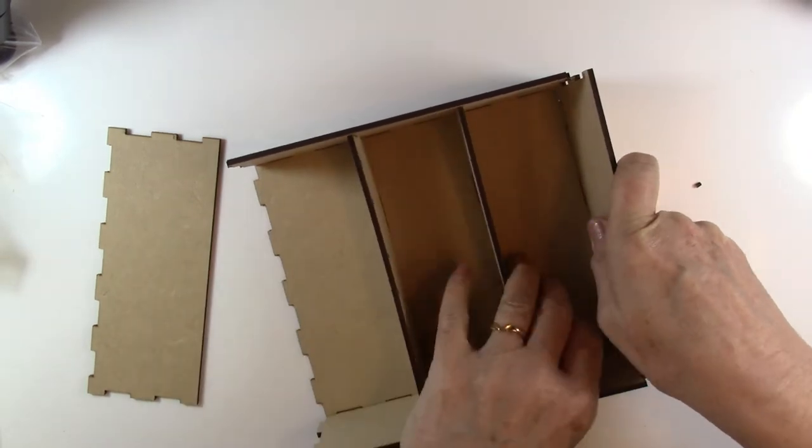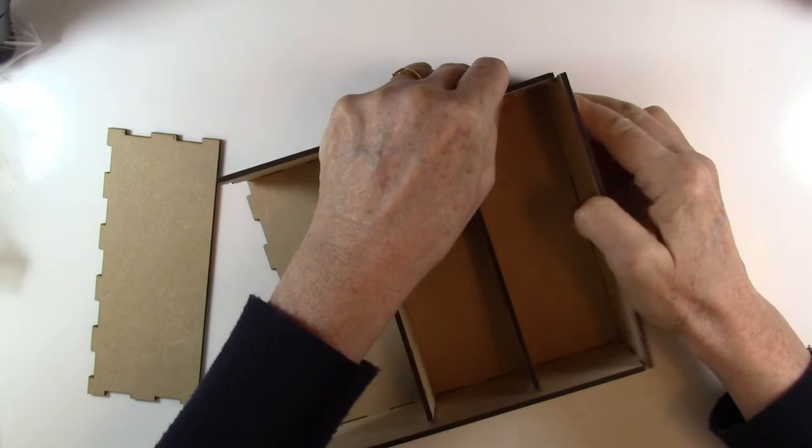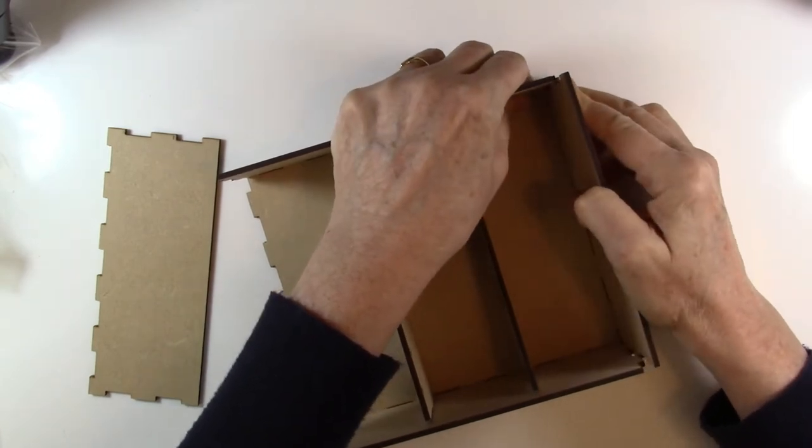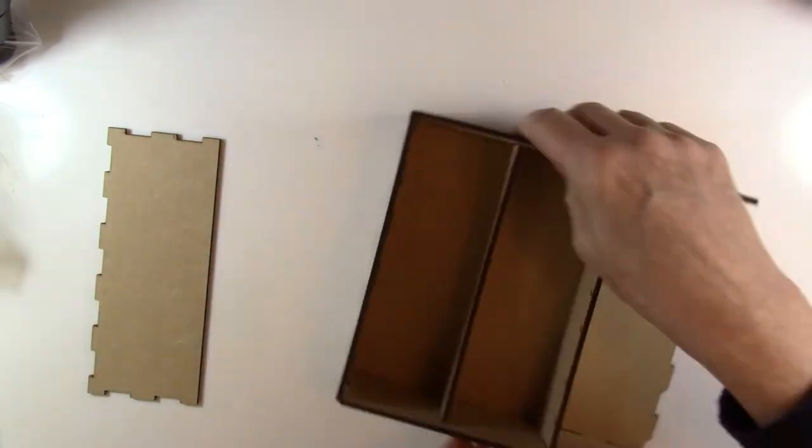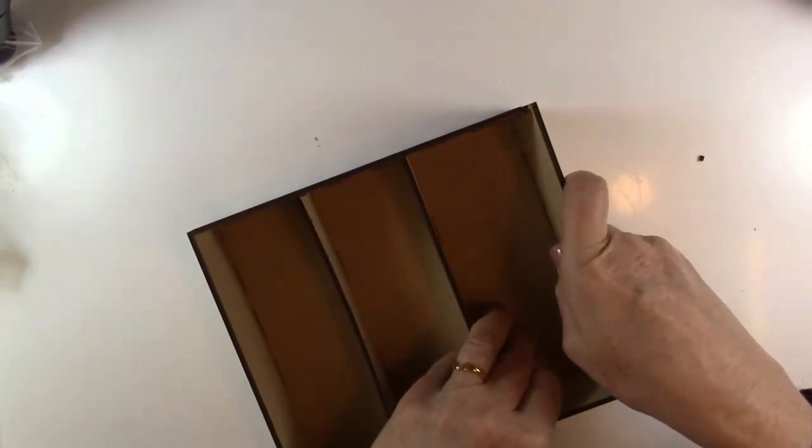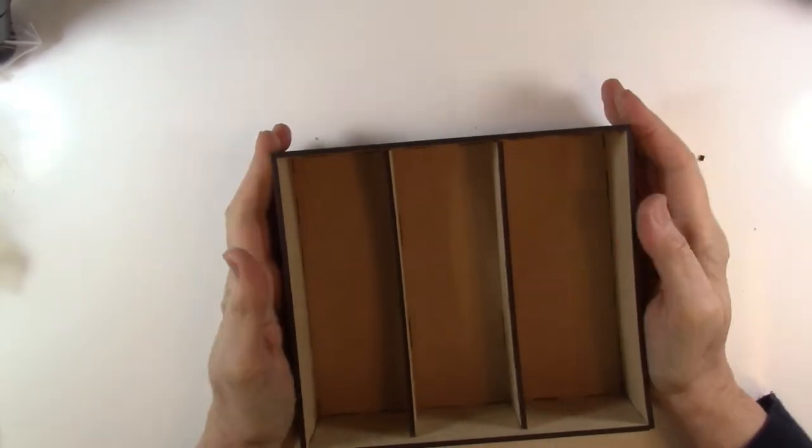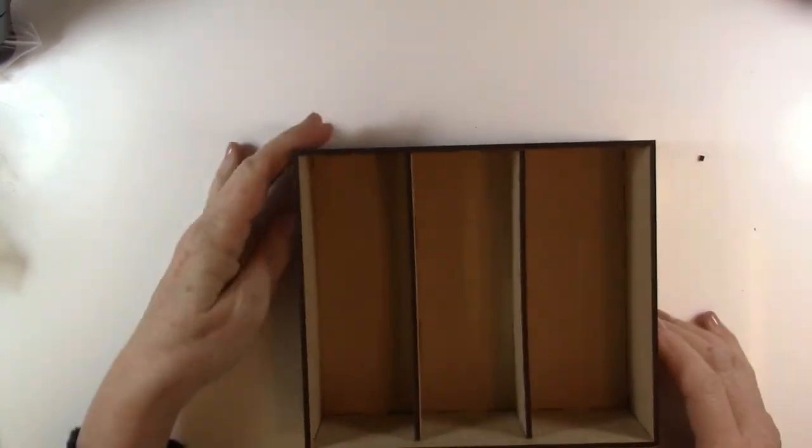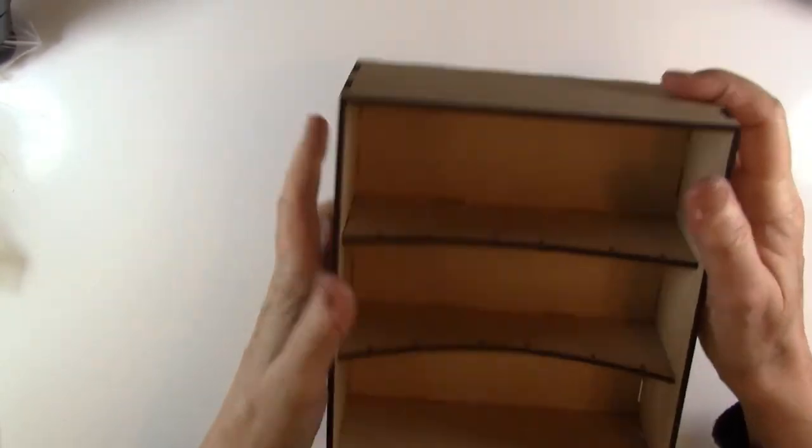So the top goes on. Now if you have a problem putting this together you can use something like an old hammer wrapped in a cloth and just give it a quick tap. Or if you have a mallet, a soft mallet, then you can use that as well. Just very gently just to tap the edges together. And there's the box. It's quite sturdy, it's been clipped together very well.